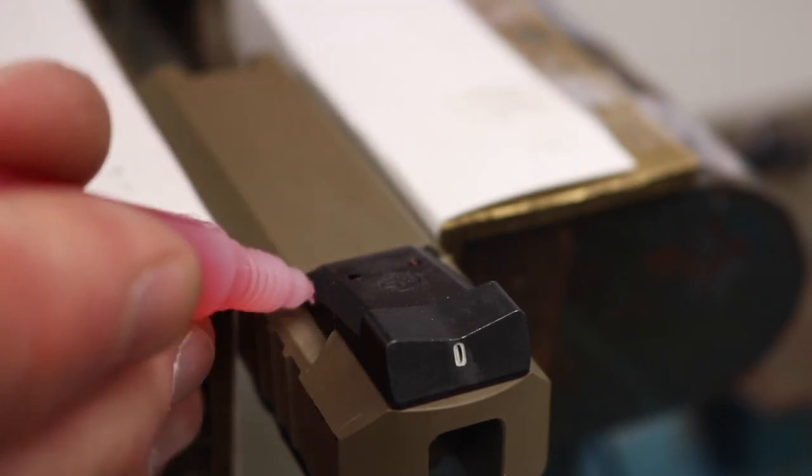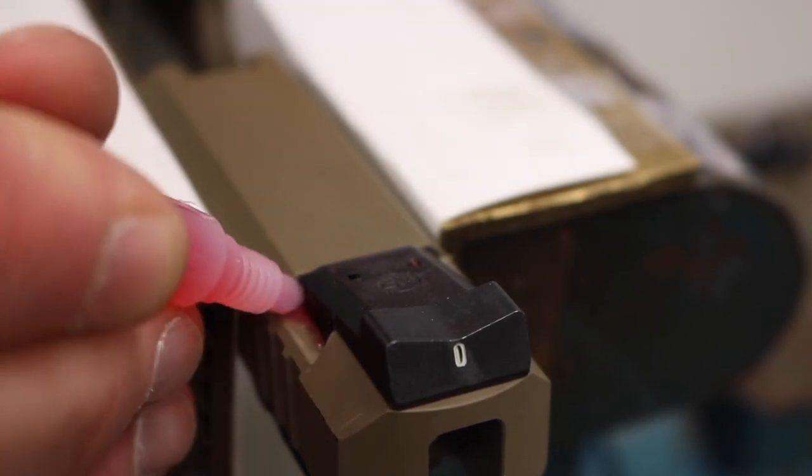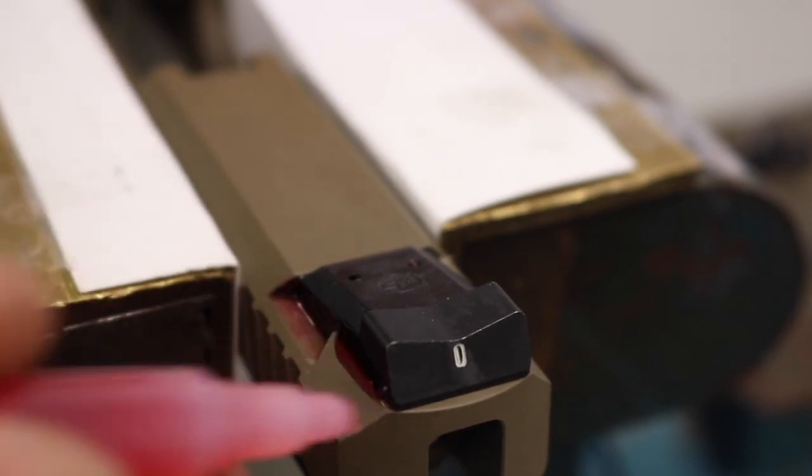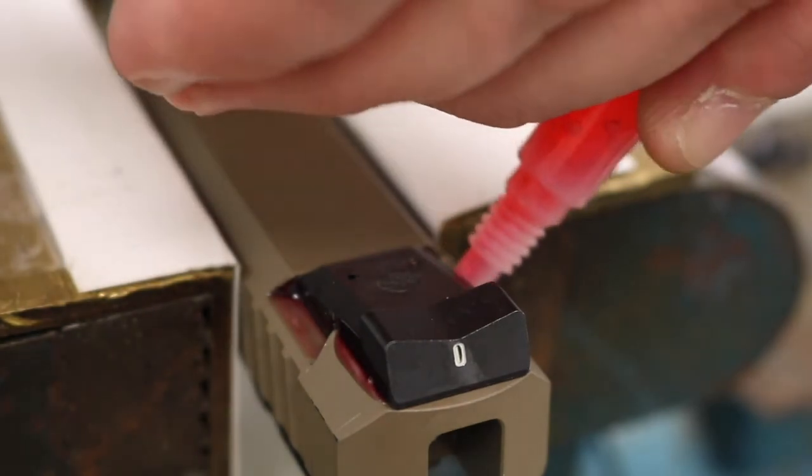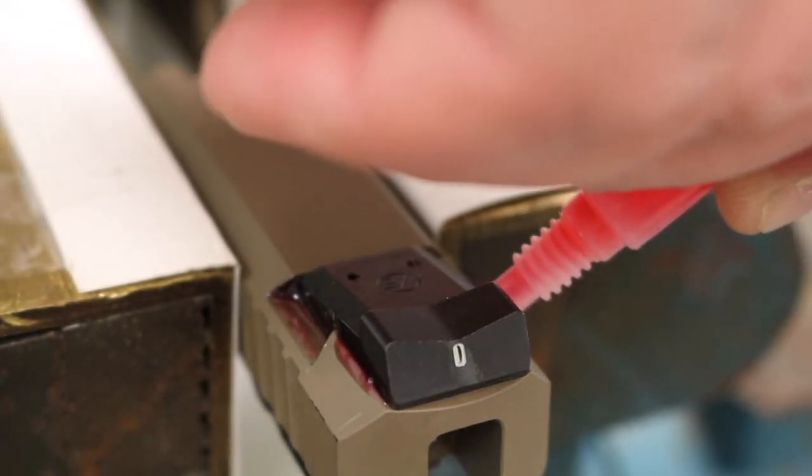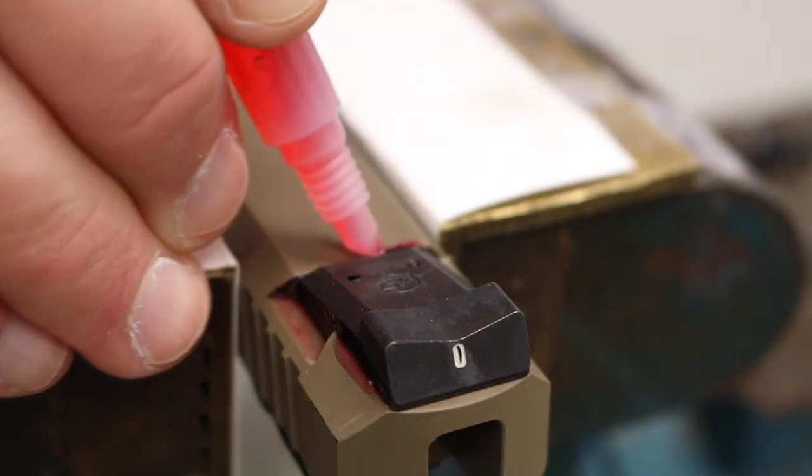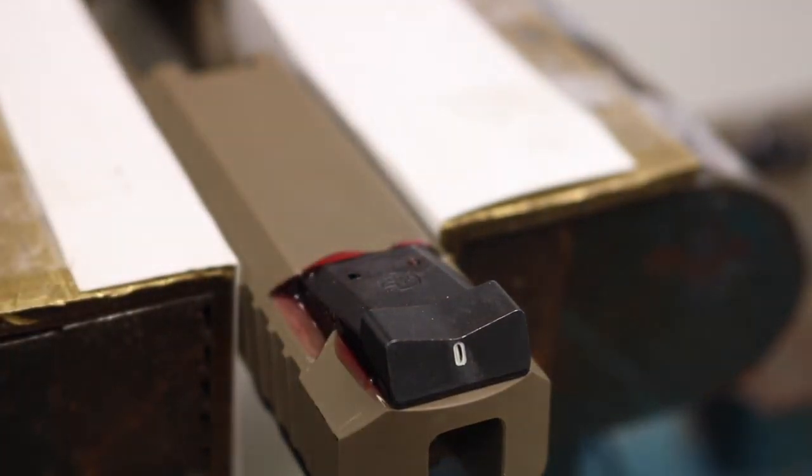And then take the red thread locker. Apply it everywhere. And we'll let that sit for three or four minutes and clean off what does not creep into the dovetail.